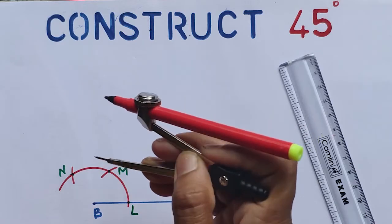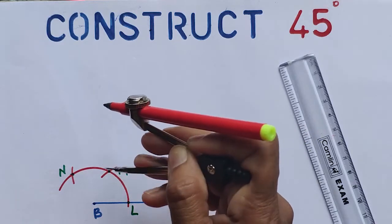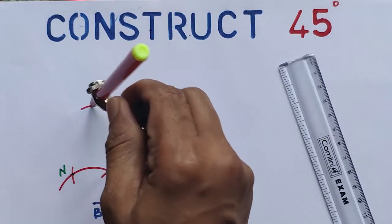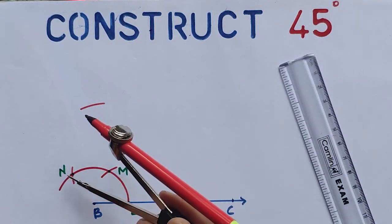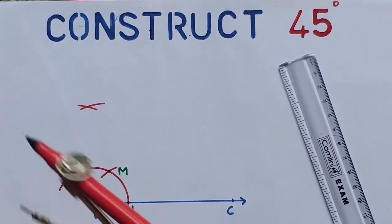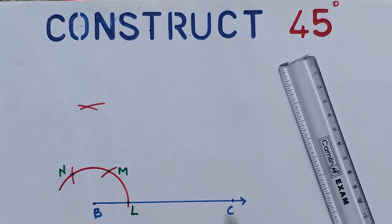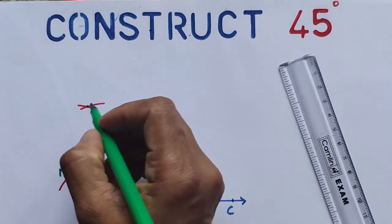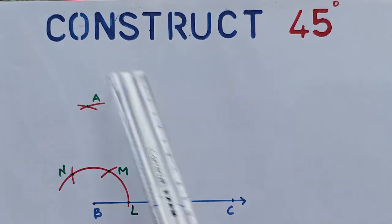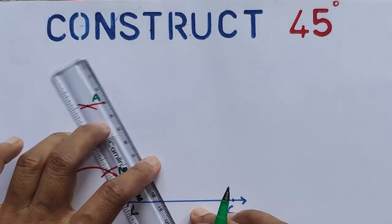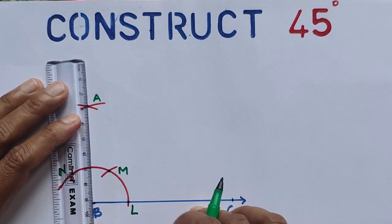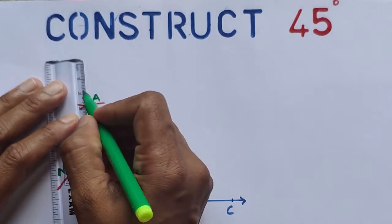So if you want, you can change the compass measure, otherwise no need to change. Place the metal tip on M, draw an arc. Without changing the compass, place the metal tip on N, draw another arc. It intersects at A. Then join A and B. We will get 90 degrees. You can use a dotted line for joining.